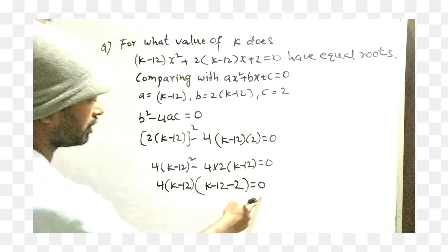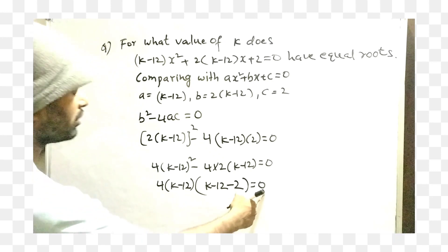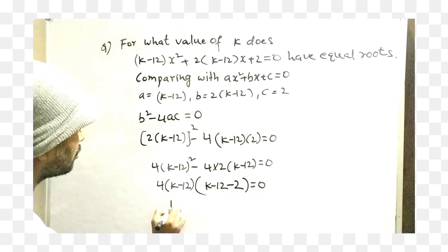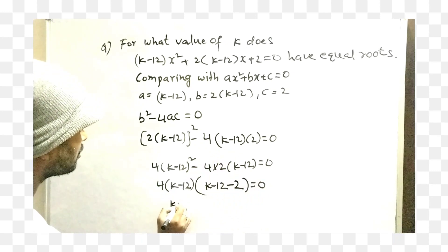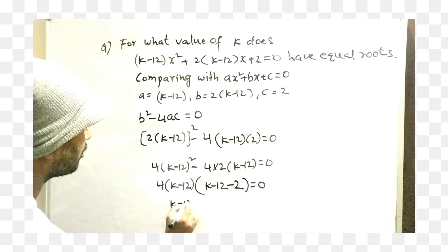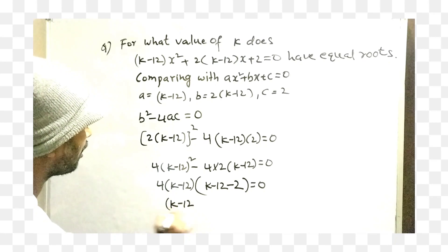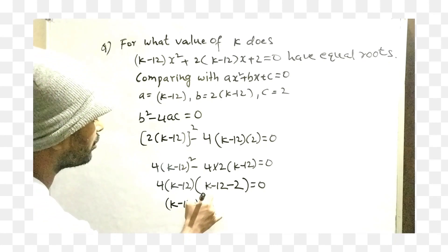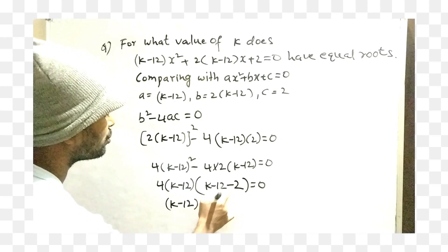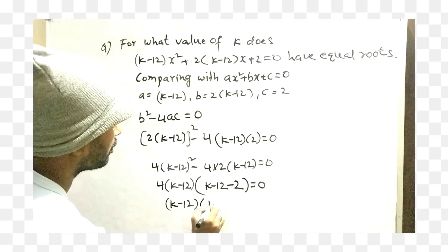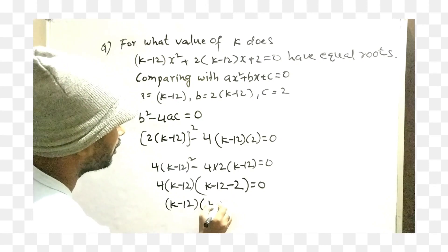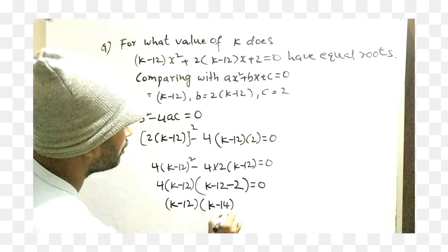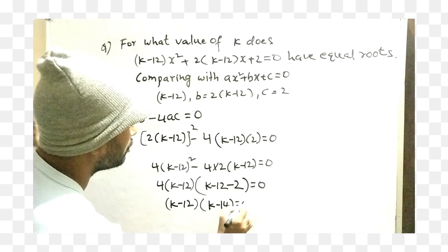We can take 4 to the right side — it becomes 0, so remaining is (k minus 12). This gives k minus 12 minus 2, which is k minus 14, equals 0.